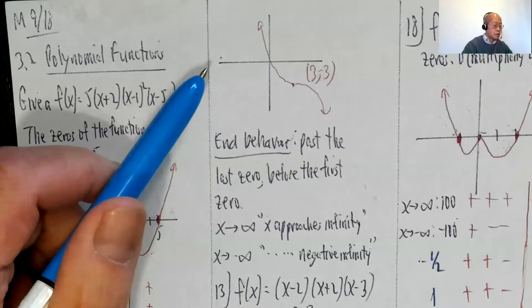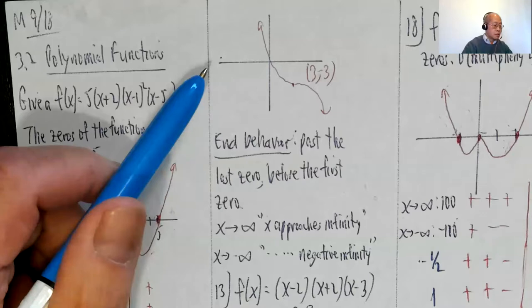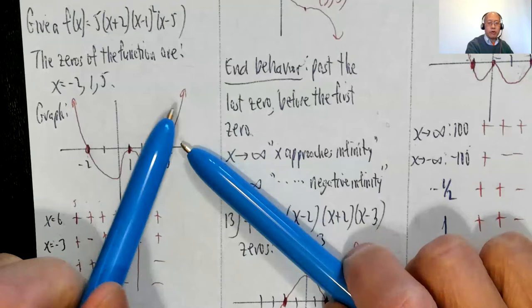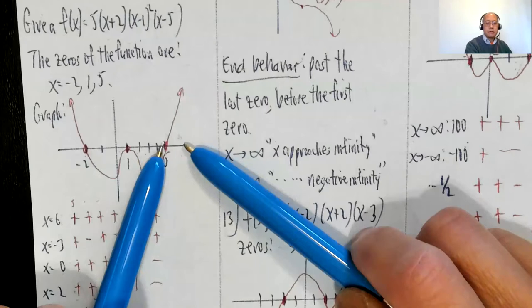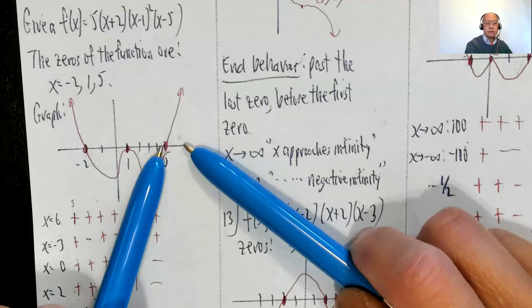Now let's talk about end behavior. End behavior means what happens past the last zero or before the first zero — what happens when x approaches positive infinity or negative infinity. Once you've laid down all your zeros, you ask: what happens to the far right of the last zero, and to the far left of the first zero?